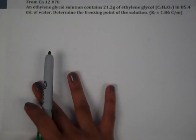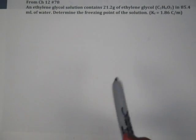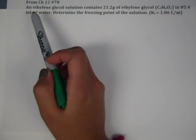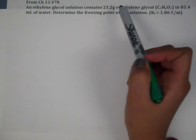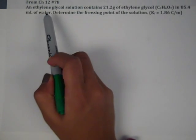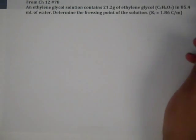The second one from chapter 12 is number 78, and it's with one of the colligative properties, freezing point depression. So we have ethylene glycol, 21.2 grams of ethylene glycol in 85.4 milliliters of water, and it wants to know the freezing point of the solution.